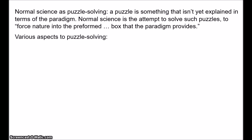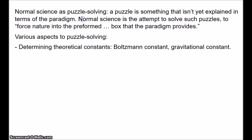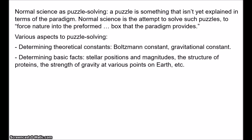There are various aspects to puzzle solving. First, normal science involves developing and articulating the theory — for example, determining theoretical constants like the gravitational constant, the Boltzmann constant, the electron charge, the mass of the proton, and so on; or determining certain basic facts like stellar positions and magnitudes, the structure of proteins, the interaction of different chemicals, the strength of gravity at various points on the Earth. Development of the theory will also involve trying to extend the theory to other fields in order to explain other phenomena.